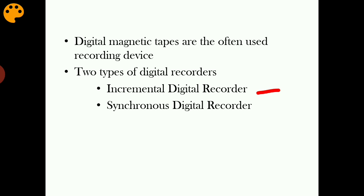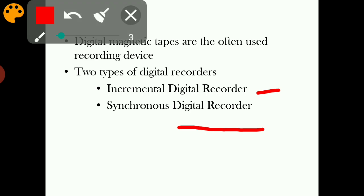In a synchronous digital recorder, the magnetic tape is in continuous motion. The incoming bits will be encoded onto the tape at a particular rate.